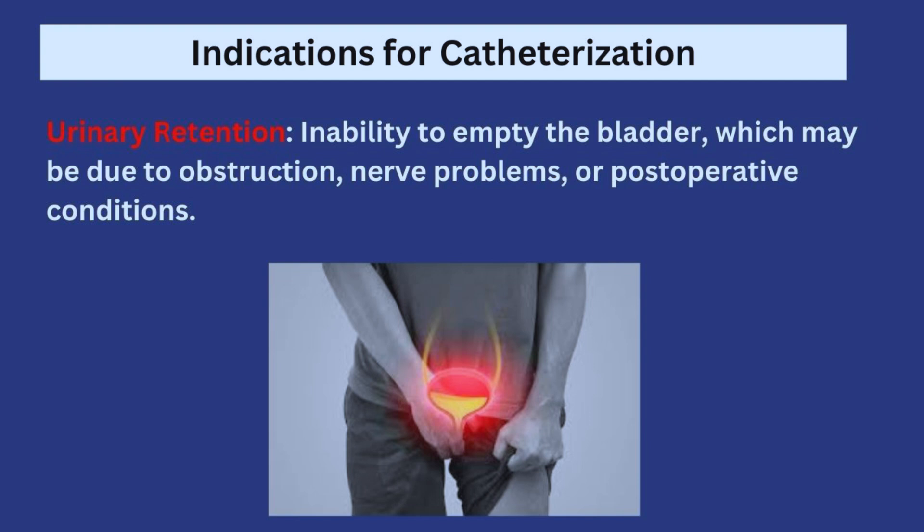Now that we understand what catheterization is, let's talk about the indications. The first indication is urinary retention — when a person is not able to pass urine or empty their bladder. It may be caused by obstruction, nerve problems, or post-operative conditions where the patient has been under analgesia, is still drowsy, and cannot pass urine. In that case you can insert a catheter to drain the urine.